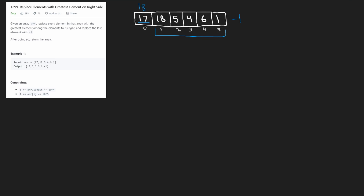We can repeat this process. For 18, we look at the last 4 elements and the max is 6, so we replace 18 with 6. To replace 5, we look at the last 3 elements — again, the max is 6, so we replace 5 with 6. To replace 4, we look at the last 2 elements — again, the max is 6. To replace 6, we look at the last element, which is 1, so we replace 6 with 1. And of course, 1 is replaced with negative 1.